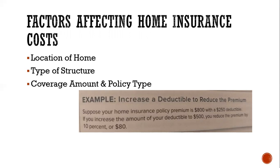An increase in a deductible will reduce your premium. Remember the deductible is what you have to pay before the insurance company pays anything. If you have a tree fall on your house with a $500 deductible and it's going to cost $5,000 to fix, you pay $500 and the insurance company pays $4,500. In this scenario, suppose your homeowner's insurance premium is $800 with a deductible of $250. If you were to increase the deductible from $250 to $500, you can reduce your premium by 10%, which is $80. So you would save $80 a year by increasing your deductible. That's something to consider.